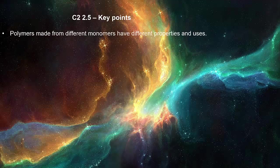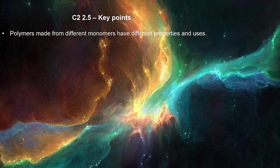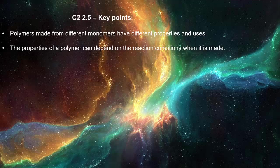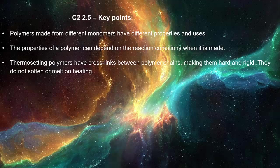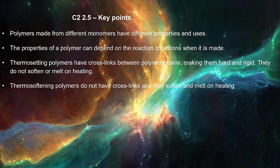Polymers made from different monomers have different properties and uses. The properties of a polymer can depend on the reaction conditions when it is made. Thermosetting polymers have cross-links between polymer chains making them hard and rigid. They do not soften or melt on heating. Thermosoftening polymers do not have cross-links and they soften and melt on heating.